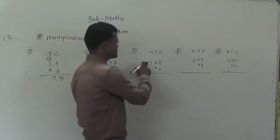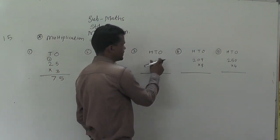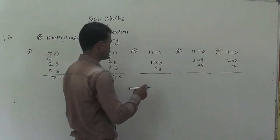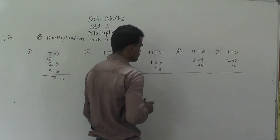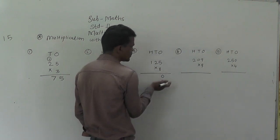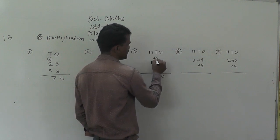Next, this is a 3-digit number: 125 multiply by 8. Here, 8 times 5 is 40. 0 right here and 4 carries to the tens place.